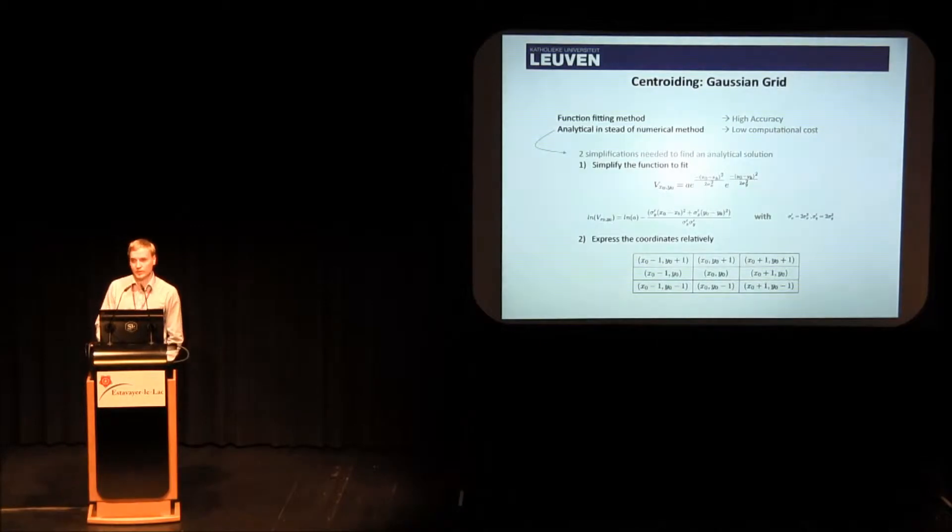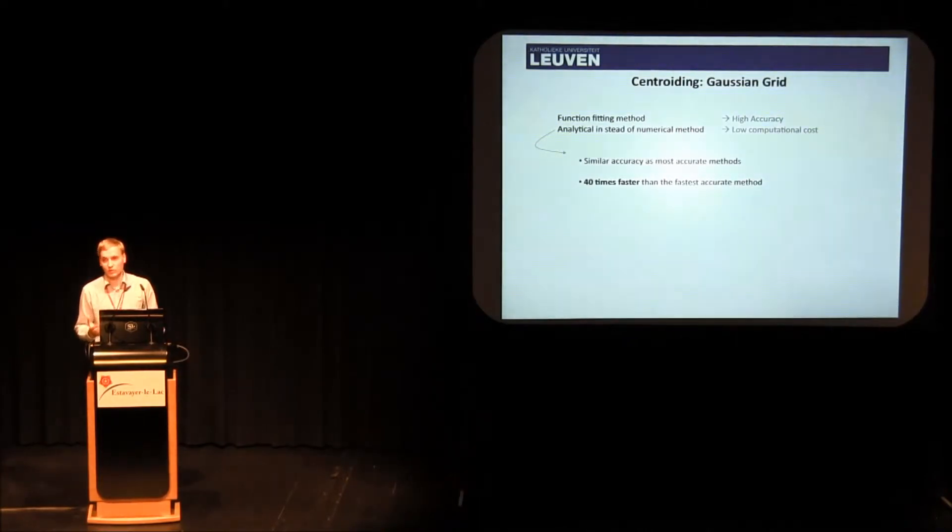We developed an algorithm which is called the Gaussian grid algorithm, which combines that low computational complexity with higher accuracy. The way in which we do that is to use a function fitting method. We will indeed plot a Gaussian through it, but we will do it in an analytical way. Normally, how it is done now is you use the least squares iterative approach to fit the function through it, but we will try to find analytical closed-form solutions to fit the function. To find an analytical solution for a problem, you cannot find it for every problem, so we will simplify the equations that we need. The first thing we do is we simplify the function to fit, that's a 2D Gaussian you see there, by first removing the exponentials, so we take the log of that function. And also, because we know that our measurements are taken on equally spaced grid, because they are measured by pixels on the camera, we can express the coordinates relatively towards a center coordinate. If we do that, we can find an analytical solution, and the good thing is that the equations that come out of this are pretty simple. We get similar accuracy, because basically we solve the same problem, but it's a lot faster than the iterative least squares method. In the calculations we did, it was 40 times faster, which is a considerable reduction in computational cost.